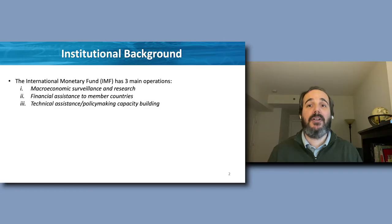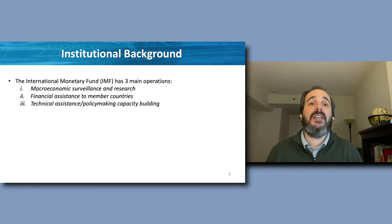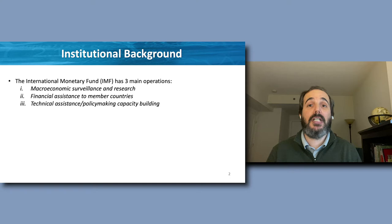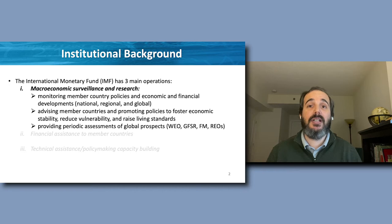Let's start with a bit of institutional background on the International Monetary Fund. The IMF has three main functions. First, it conducts macroeconomic surveillance of its member countries and of the global economy. Second, it provides financial assistance to member countries in need. And third, it also provides technical assistance for capacity building purposes. This means monitoring member country policies and economic and financial developments at the national, regional, and global levels.